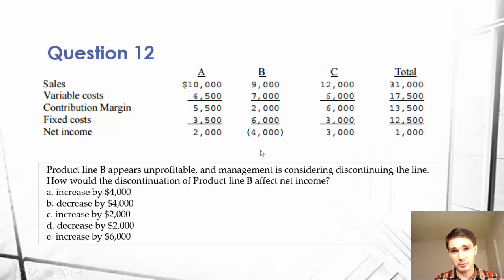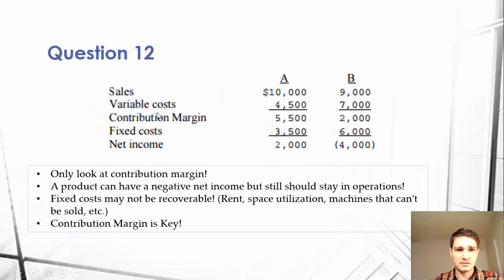The next thing that people will trip up on is the negative net income. So people will say, if product B has a negative $4,000 of net income, we should cut it because it's losing money. Well, this isn't necessarily true.